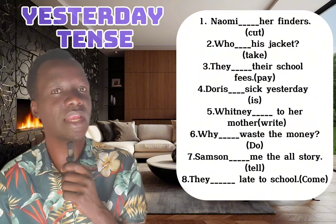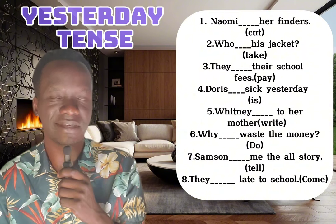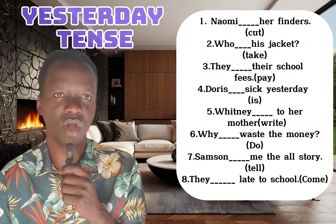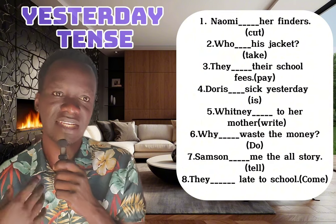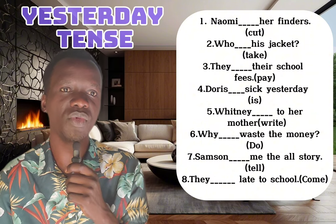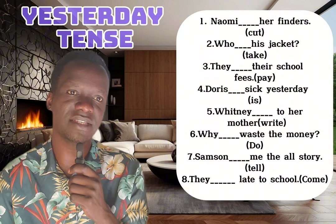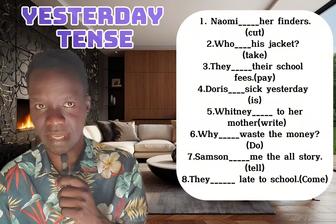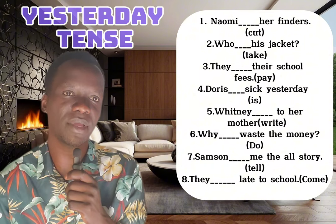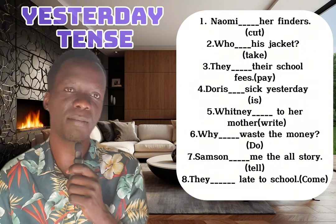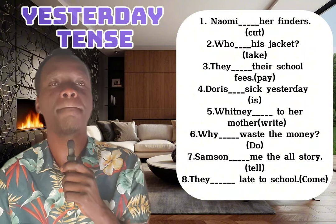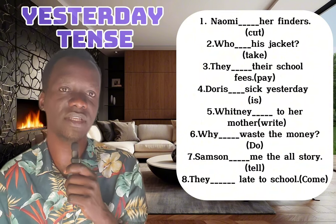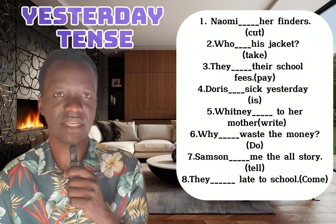For today, we want to start straight away. As I told you, we shall talk about past tense. Past tense is about yesterday — what has already happened, not what is happening or what will happen, but what already finished happening. Today we shall focus on yesterday tense.